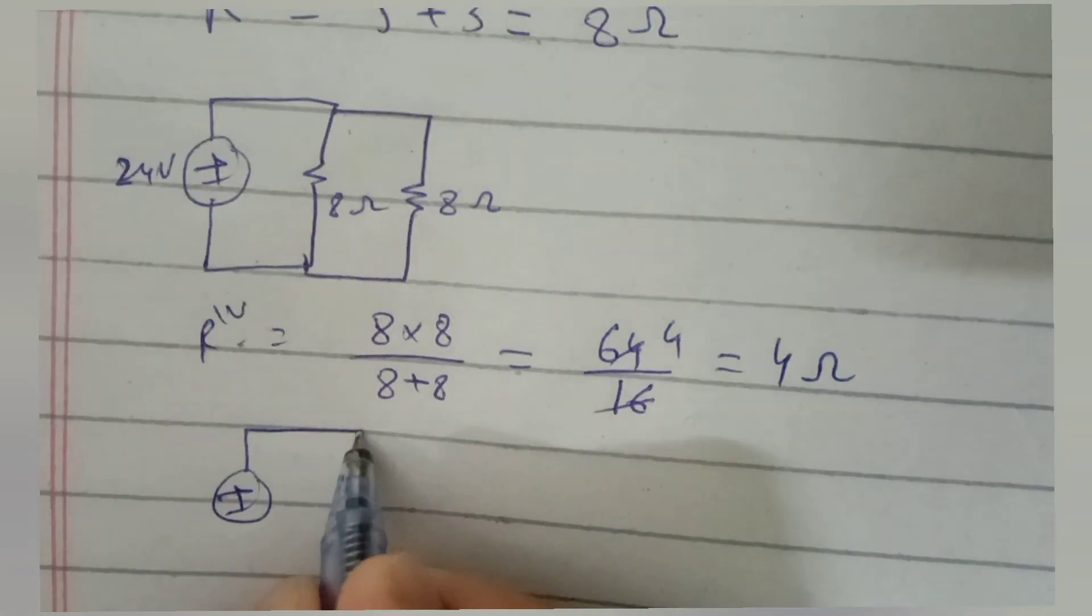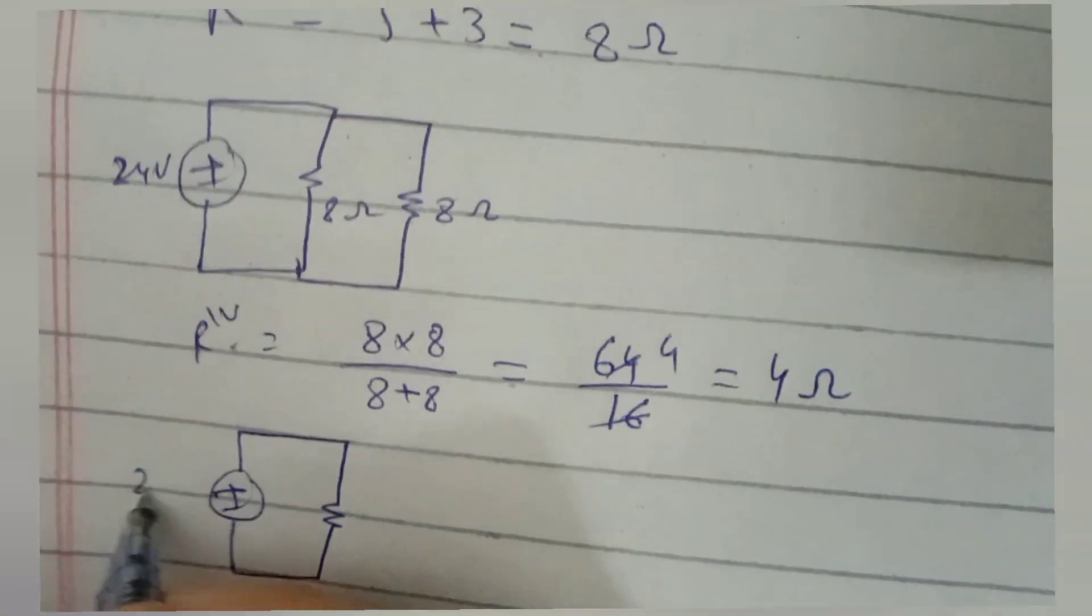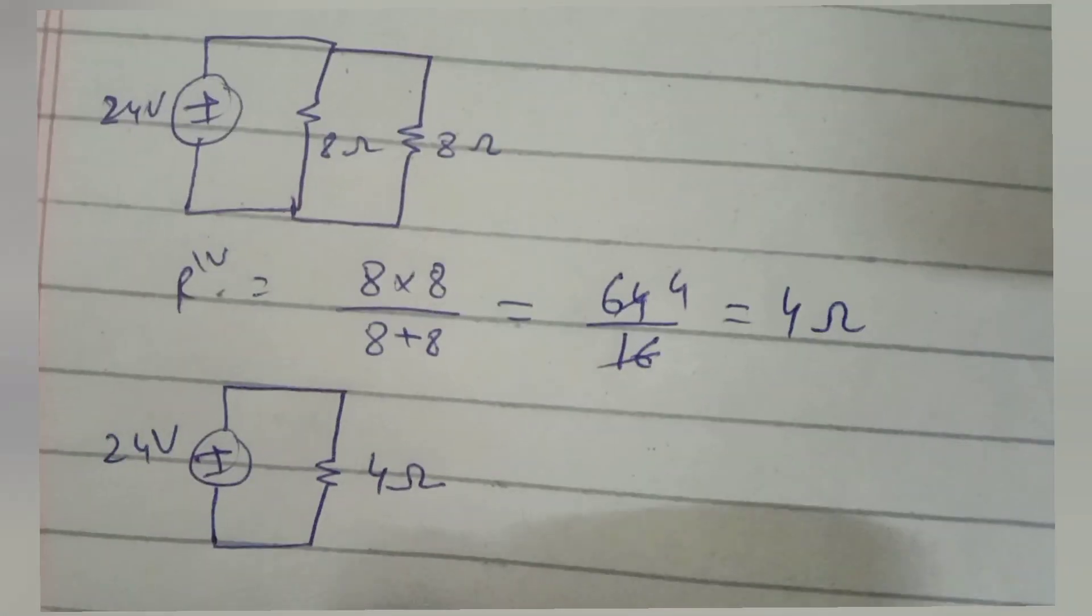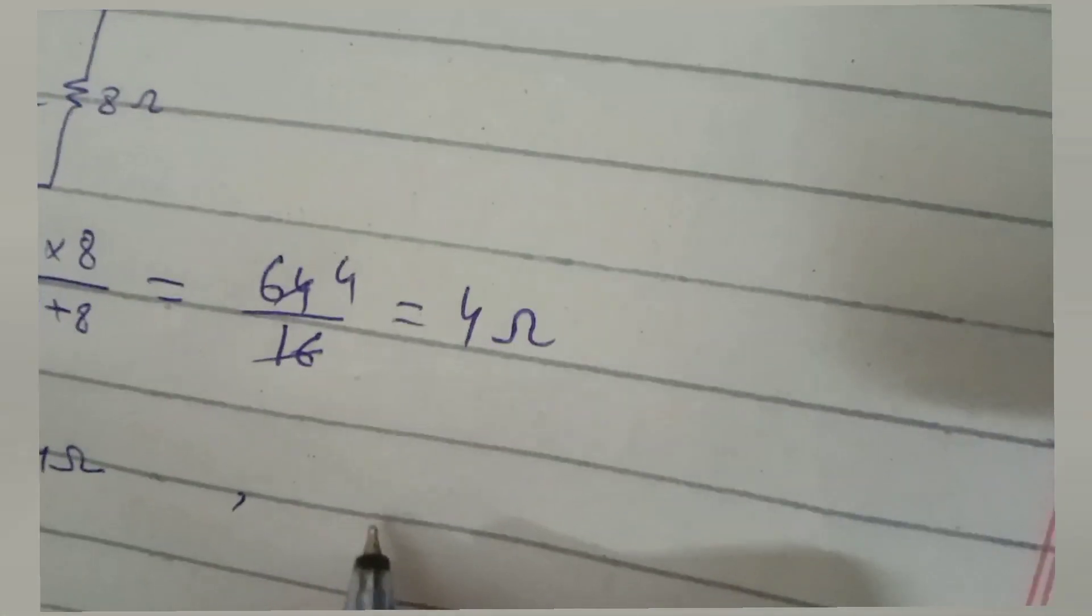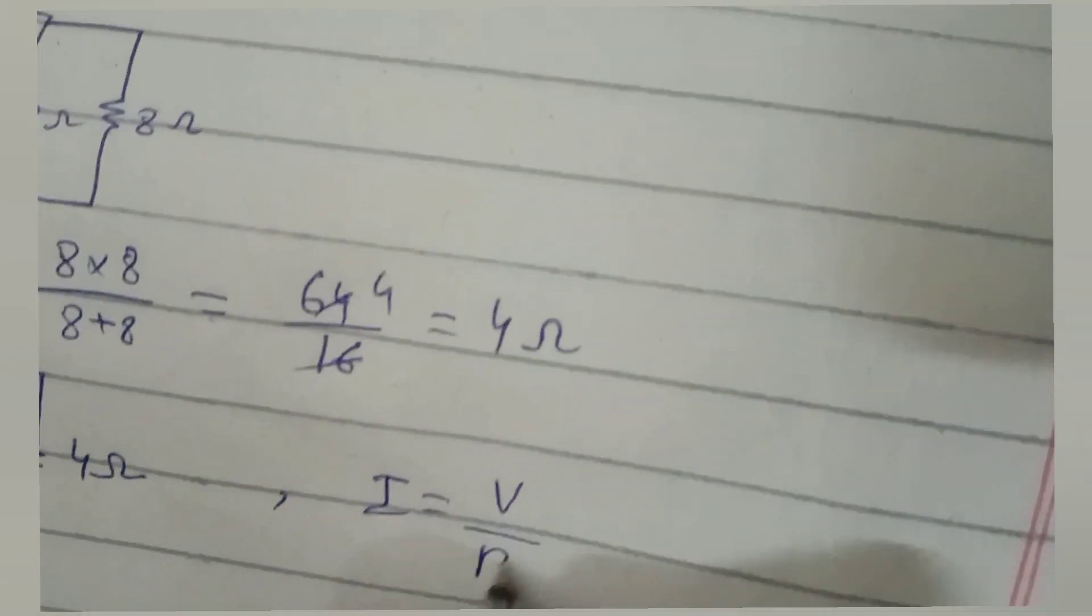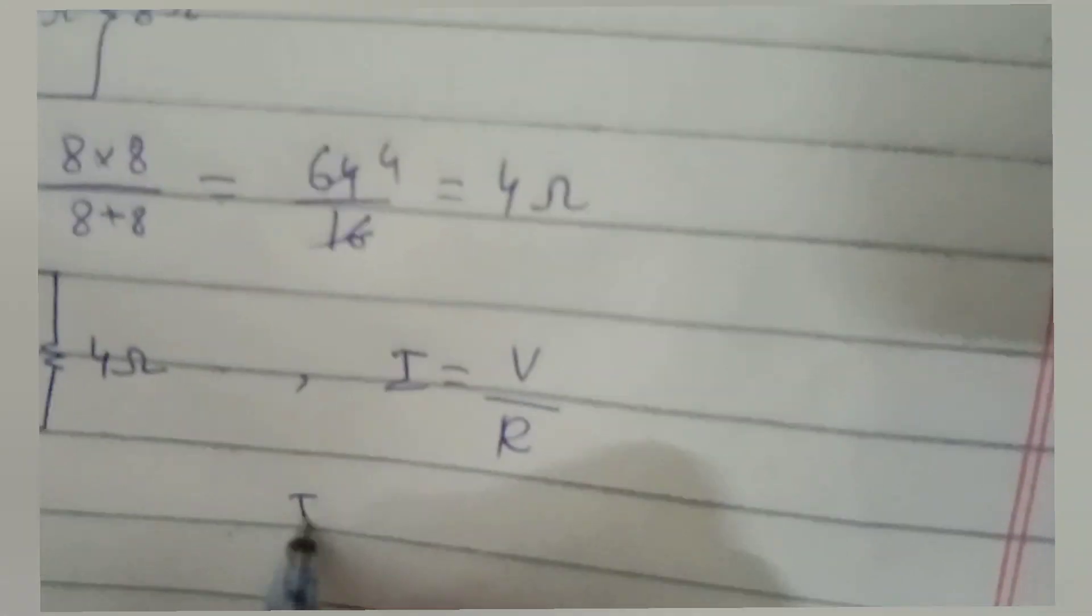Therefore we can find out the circuit current using Ohm's law: I = V/R. Put V equals 24 and R equals 4, circuit current comes out to be 6 amperes.